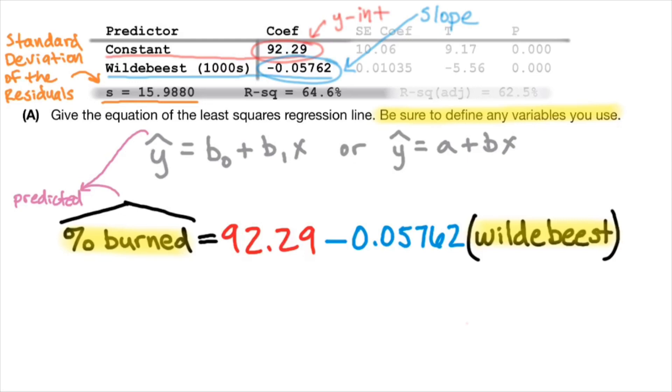If you chose not to do that, you could write the equation with just y's and x's, and then beneath it say that y equals percent burned and x equals Wildebeest. My personal preference is to put it in there. I've seen students receive zero credit on a question like this because they did not define the variables and they left off the hat. So you can have the correct numbers, but get no credit because you left off the context and that predicted hat. So make sure you always include the predicted hat, define the variables in context, either in the equation or to the side of it.